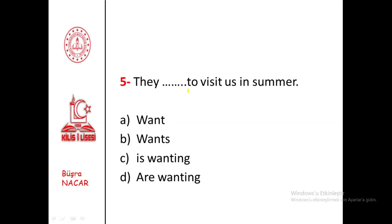Fifth question. They want to visit us in summer. Since it says 'in summer,' there is a generalization — they visit in summer — so we use Simple Present. And the verb is 'want,' which is a non-action verb and cannot be used with -ing. The subject 'they' does not take an -s suffix, so the answer is A.